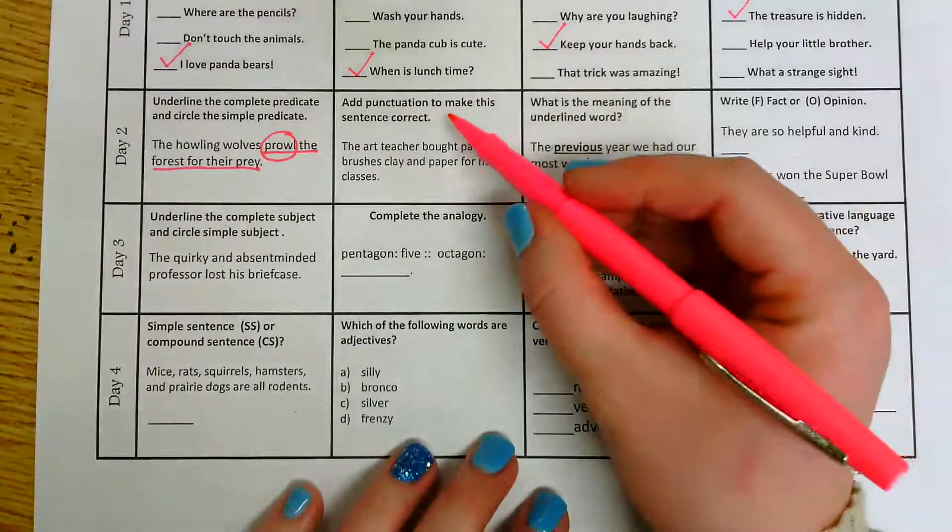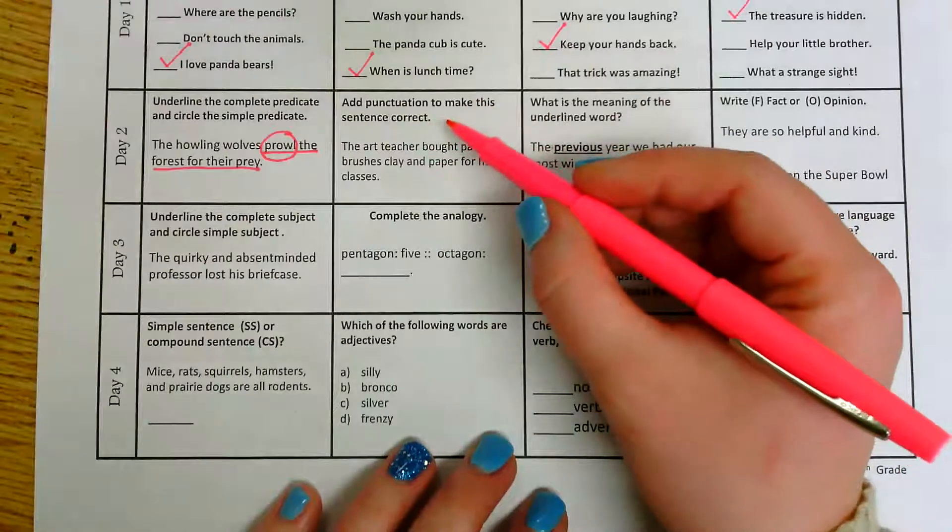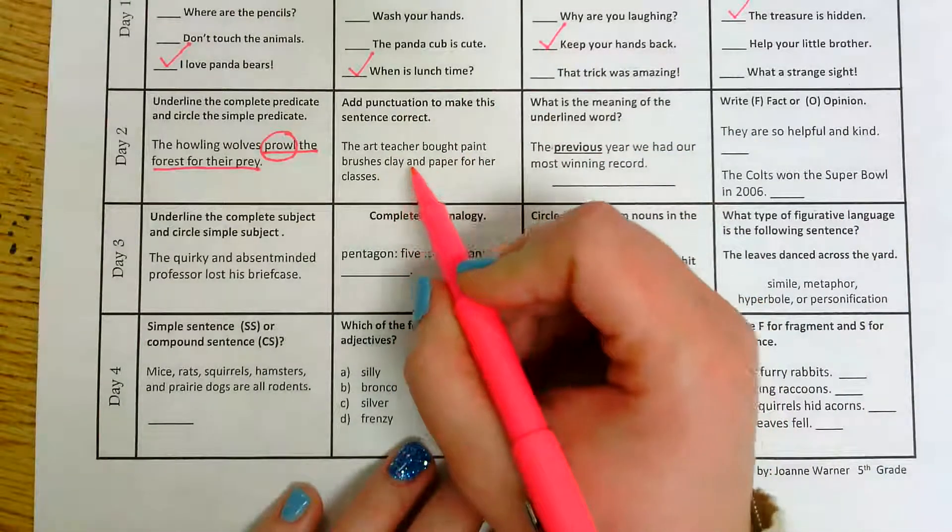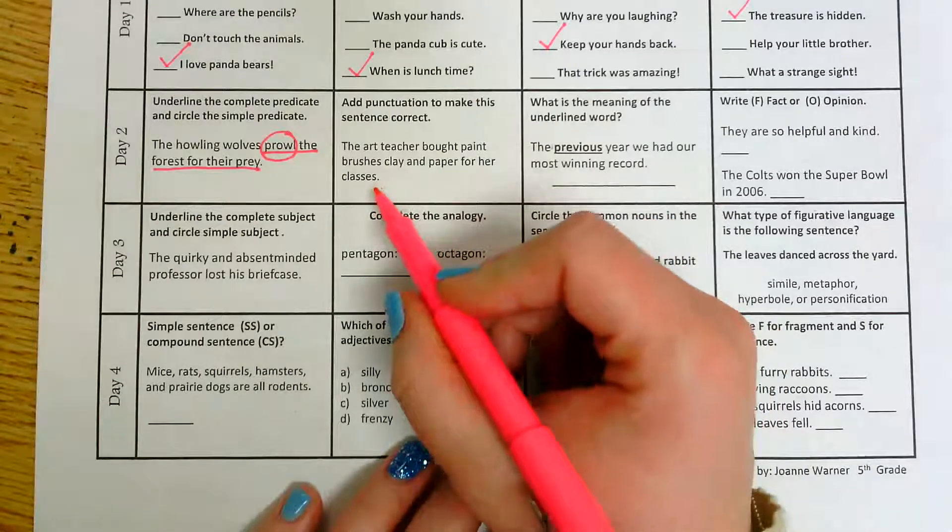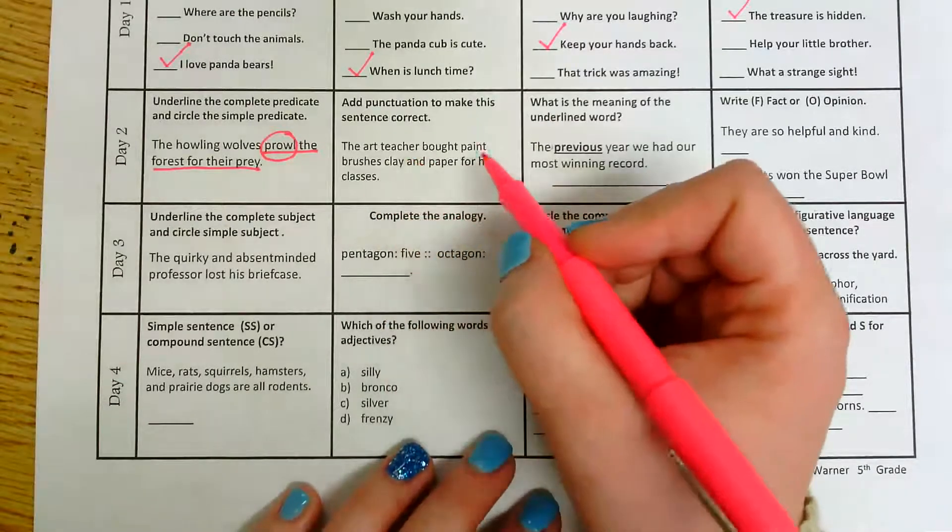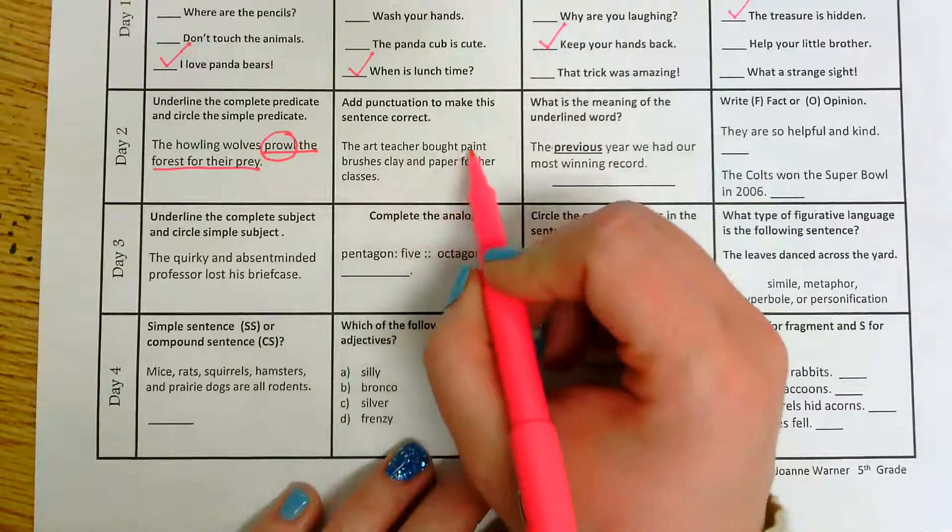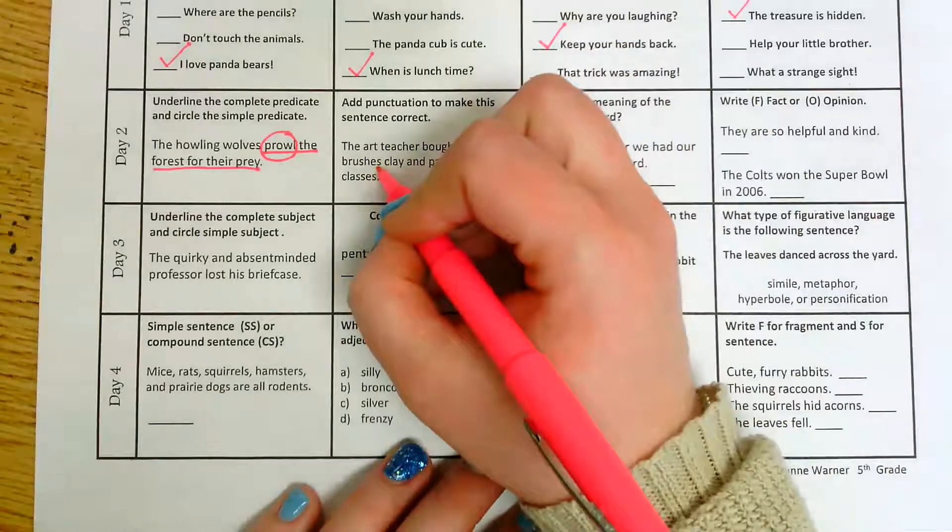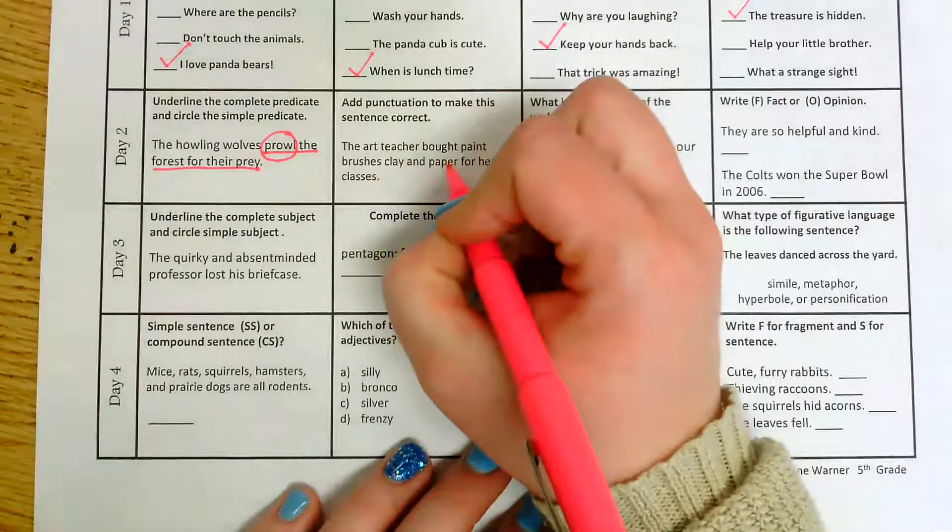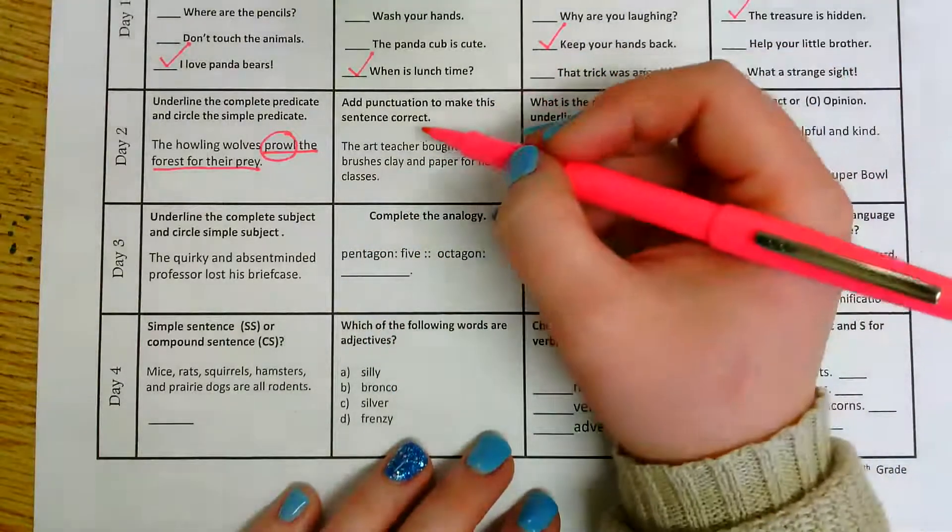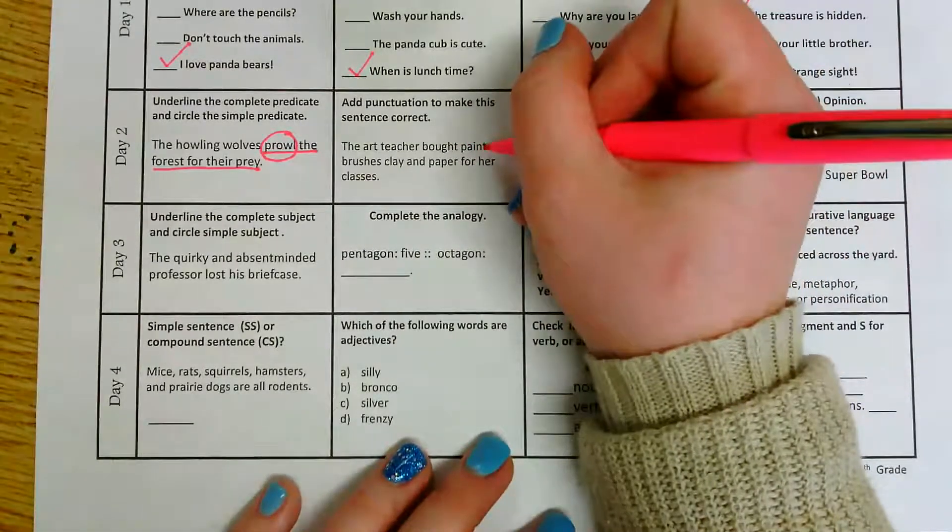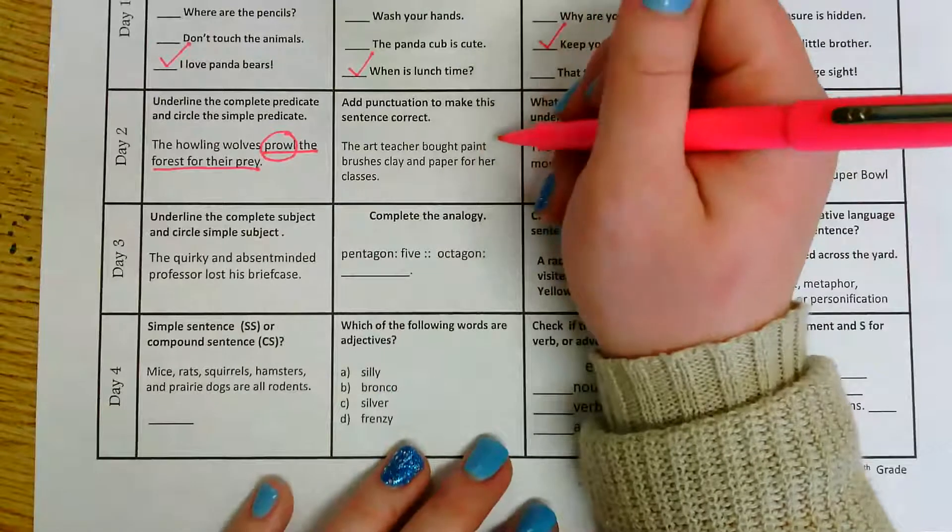The next one says add punctuation to make this sentence correct. The art teacher bought paint brushes, clay and paper for her classes. All right, so the art teacher bought paint, that's going to be one thing, brushes, clay, paper. Those are all of the different things that the art teacher is buying. So we know that when we have items in a series, we're going to separate them with commas.